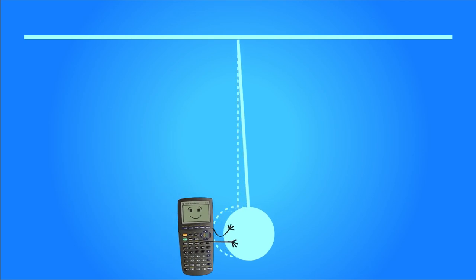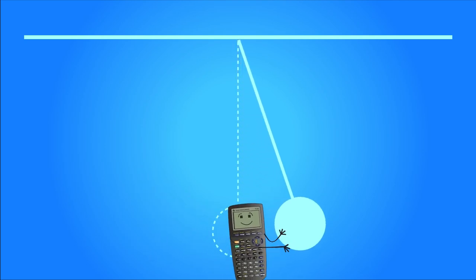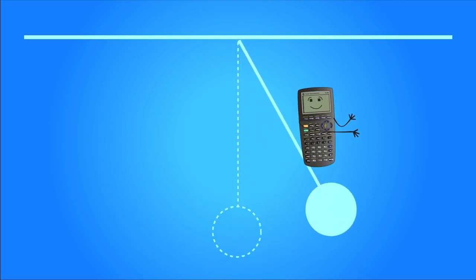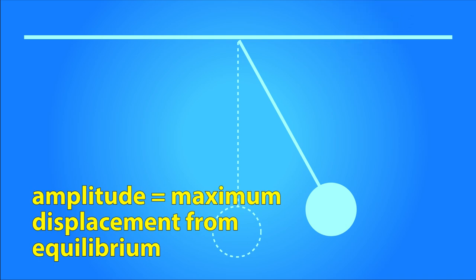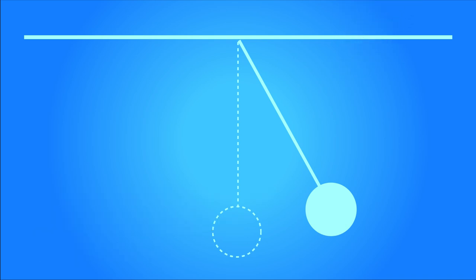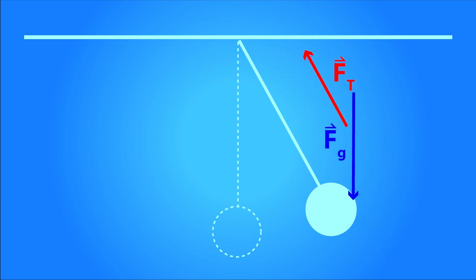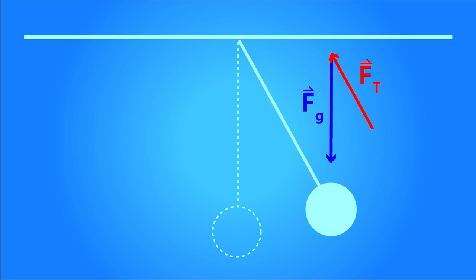Let's make a free body diagram. Let's take a look at this diagram of a pendulum pulled back to its maximum displacement from equilibrium. This is called the amplitude of the pendulum. At this point in time, the forces acting on the pendulum are the force of gravity and the force of tension. If we move these forces around a little, put them tip to tail so they're added together, we see that the total of these two forces make up a force that points down and to the left. This is the force that makes the pendulum start moving left — this is the restoring force.